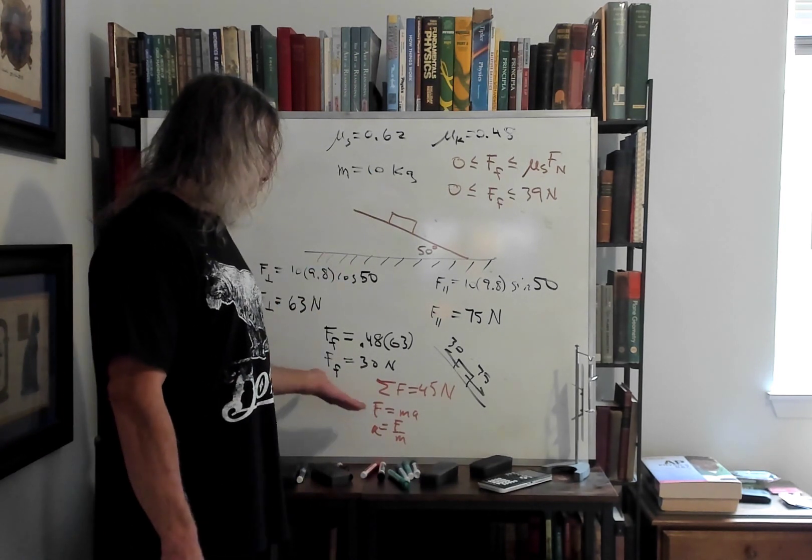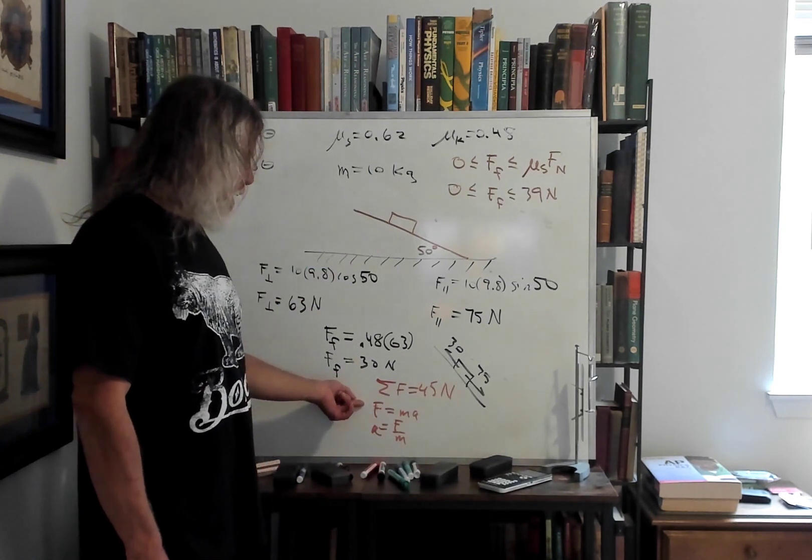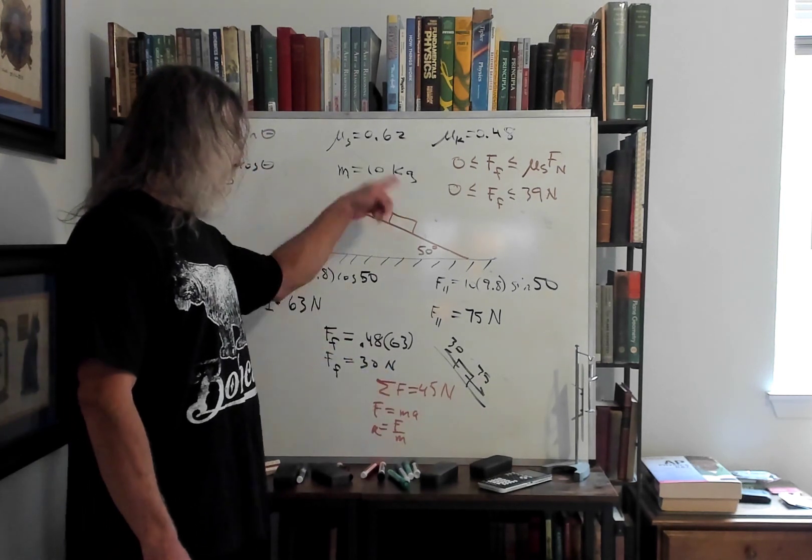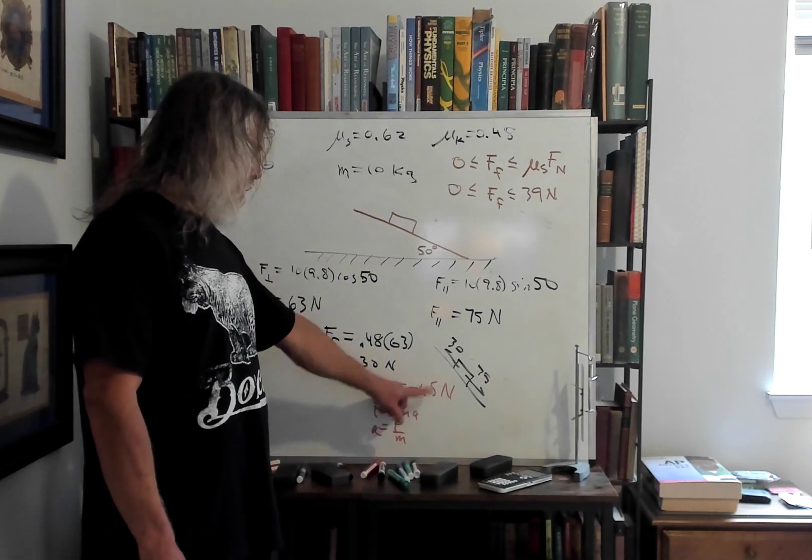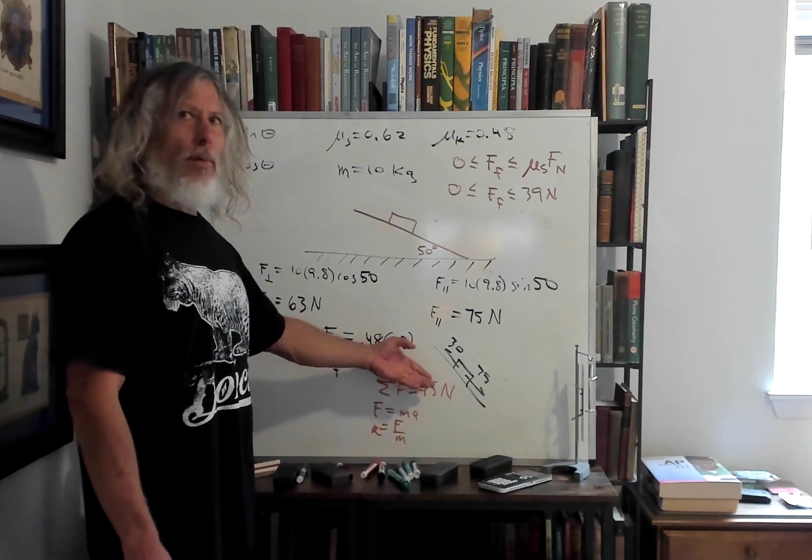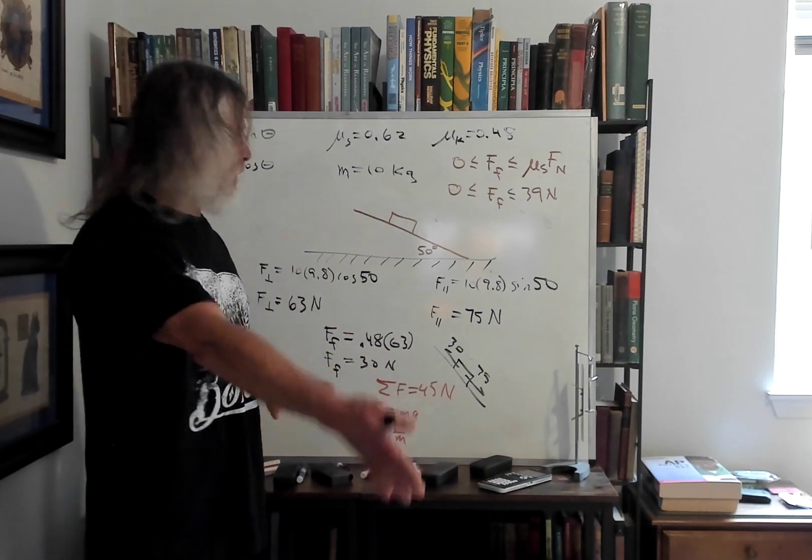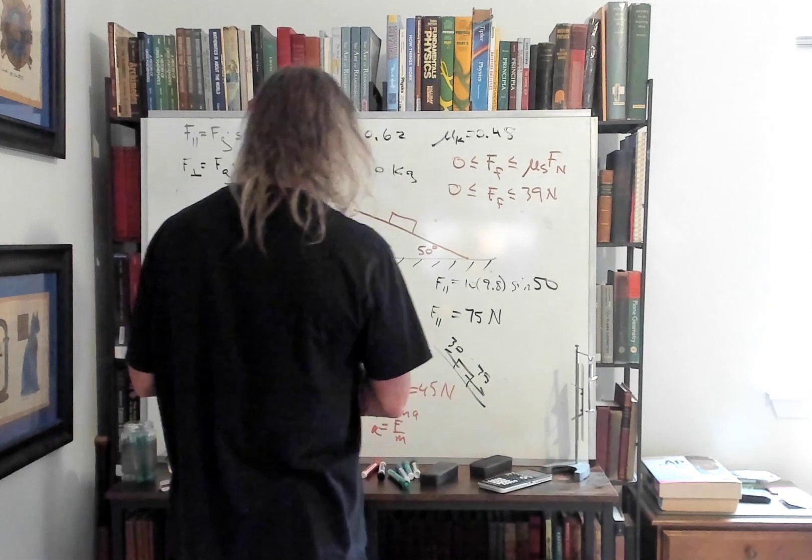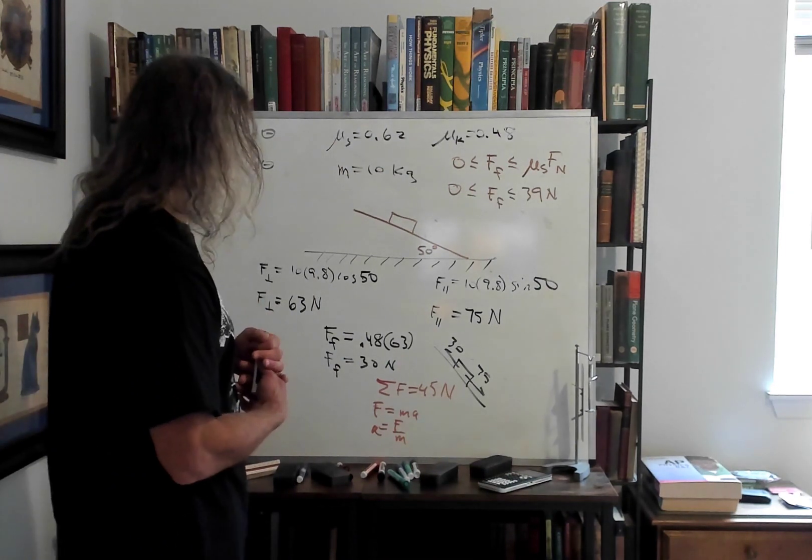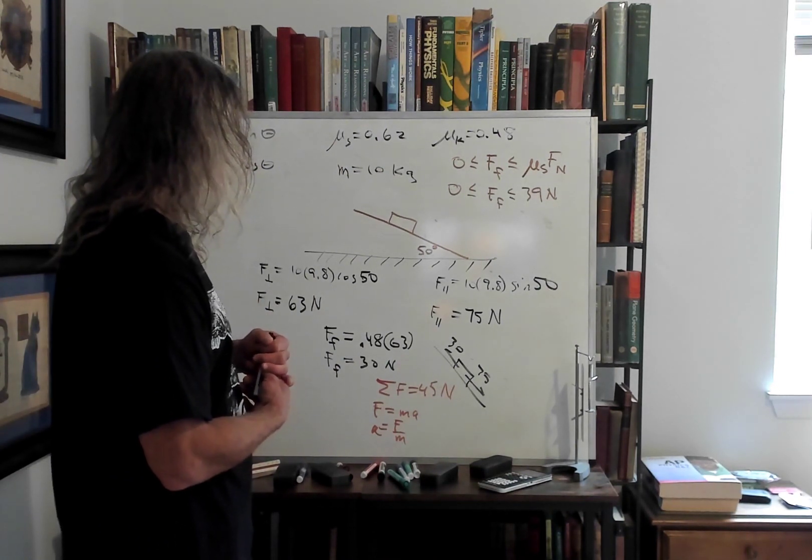So we shall continue with this. As we said, F equals MA, second law, get the net force divided by mass, 45 over 10 is 4.5, an acceleration of 4.5 meters per second squared down the incline plane. So we have that established.